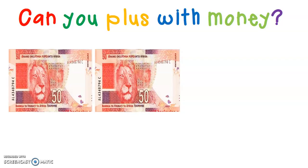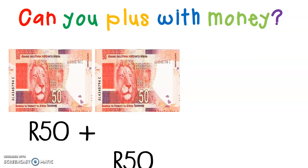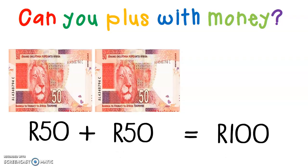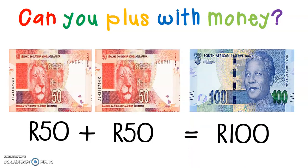Here I have a 50 Rand note and a 50 Rand note. So 50 Rand plus 50 Rand equals 100 Rand. Let's have a look at what 100 Rand looks like — there we go, it's a blue note. So 100 Rand can be divided into 2 50 Rand notes. What else can make up a 100 Rand note? Let's count in 10s: 10, 20, 30, 40, 50, 60, 70, 80, 90, 100. So 10 10 Rand notes make 100 Rand. And 5 20 Rand notes also make 100 Rand.